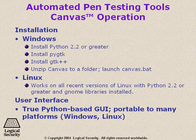In Linux, it's a little bit different. It works on all recent versions of Linux with Python 2.2 installed or greater. This, in particular, works in the GNOME desktop environment. The interface is a true Python-based GUI, which is portable to many different platforms, including Windows and Linux. Both of those use the Python GTK in one form or another, whether it's GNOME on the Linux side and GTK on the Windows side.